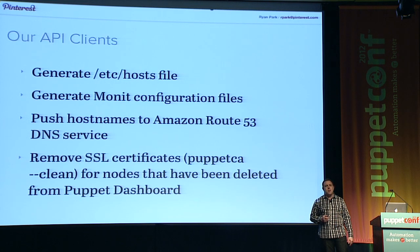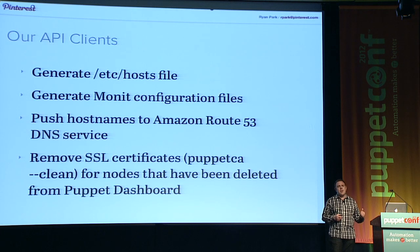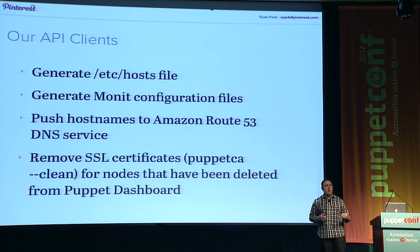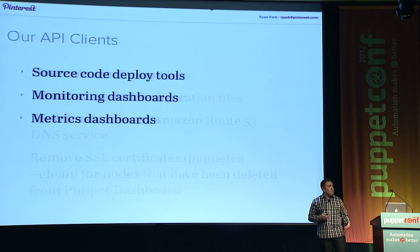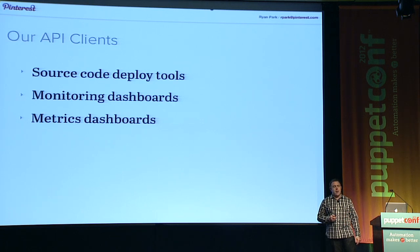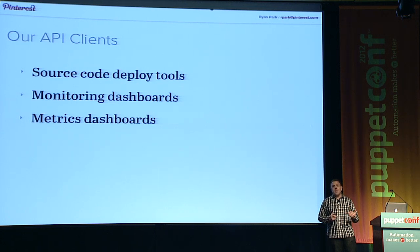We can take the server host names and push those into Amazon's Route 53 DNS service, which is what we use for internal and external DNS. We also use this to keep the list of known hosts and certificates in the Puppet Master clean. We can find any servers that have been deleted from the Dashboard and delete them automatically from the Puppet Master, so that if we launch a replacement with the same name, we don't have a certificate conflict. We also integrate our operational deployment tools directly with the data in the Puppet Dashboard, so they query the API to determine what hosts to deploy new code to or which hosts to display on our monitoring dashboards.